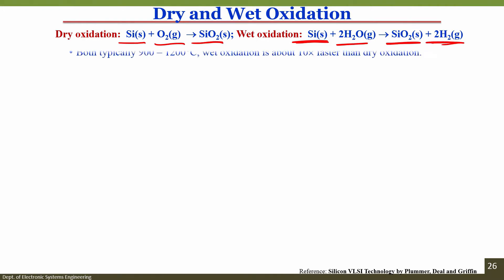Looking at the temperature range, both 900°C and 1200°C — within this range you can deposit or grow the oxide. Wet oxidation is about 10 times faster compared to dry oxidation.